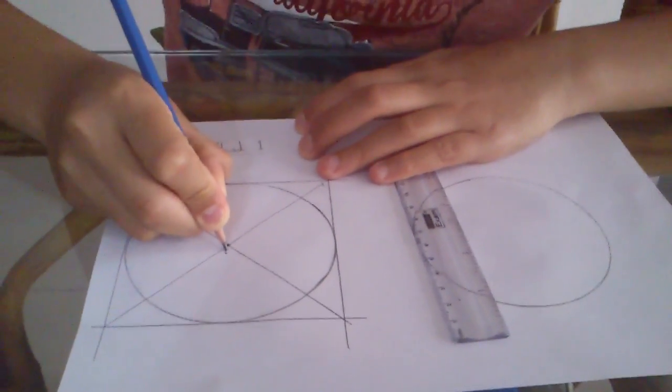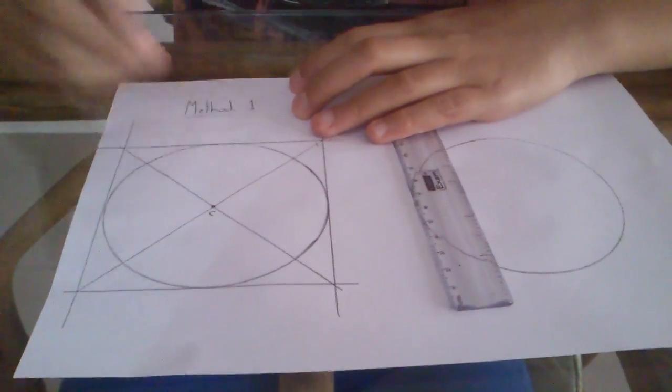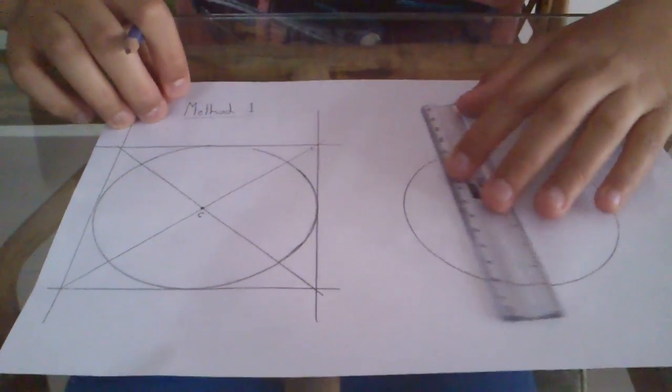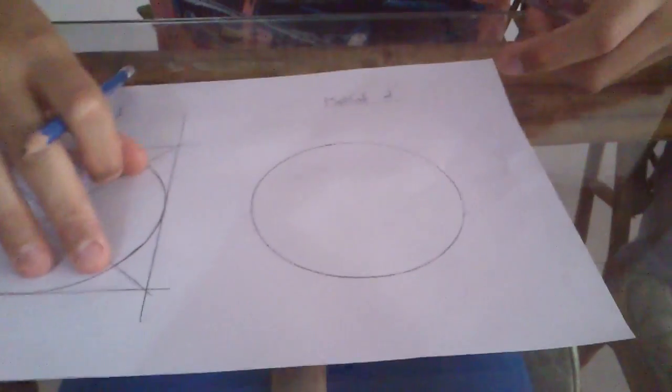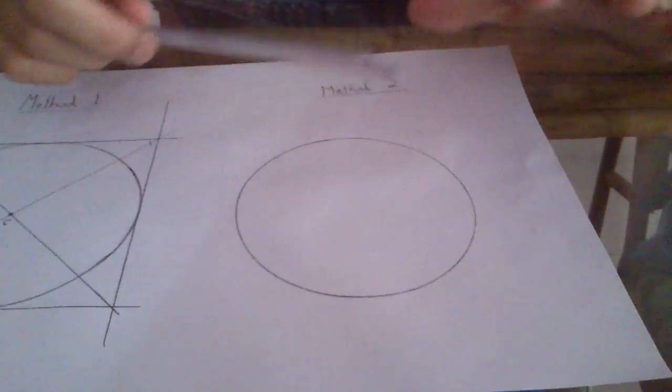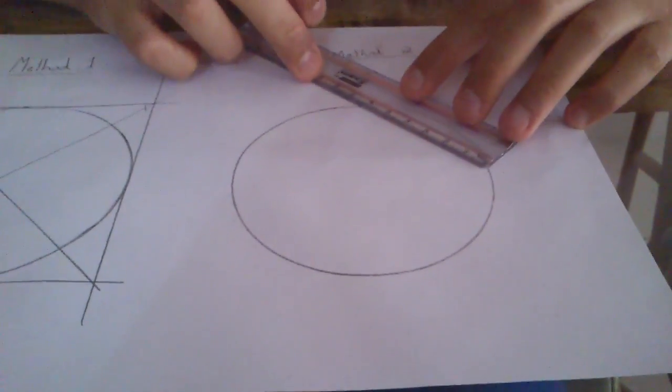There we have the center of your circle. And then the other method is by simply drawing a chord, two chords in your circle.